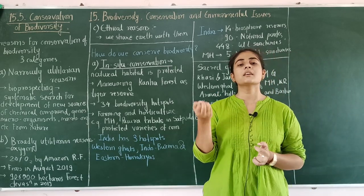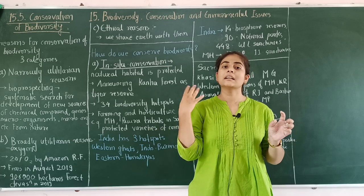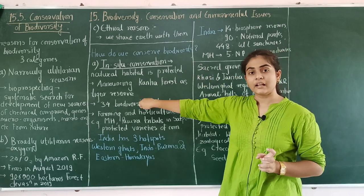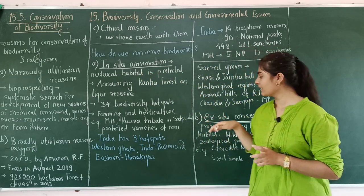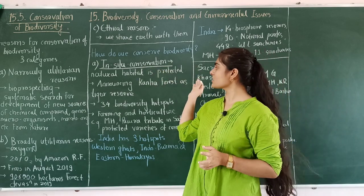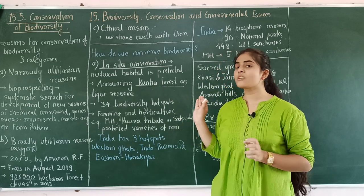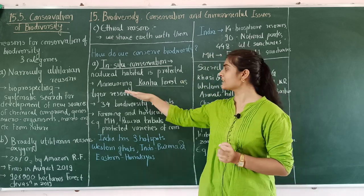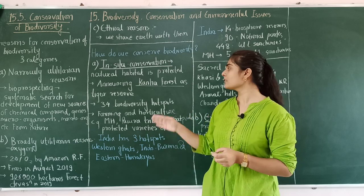Ex-situ conservation is the opposite — it means out-of-home protection. Endangered species are conserved in places like zoological parks and botanical parks, away from their natural habitat. An example of in-situ conservation is the Kanha forest tiger reserve — tigers are protected within their natural forest habitat. This is an example of in-situ conservation, where the species is protected inside its native environment.